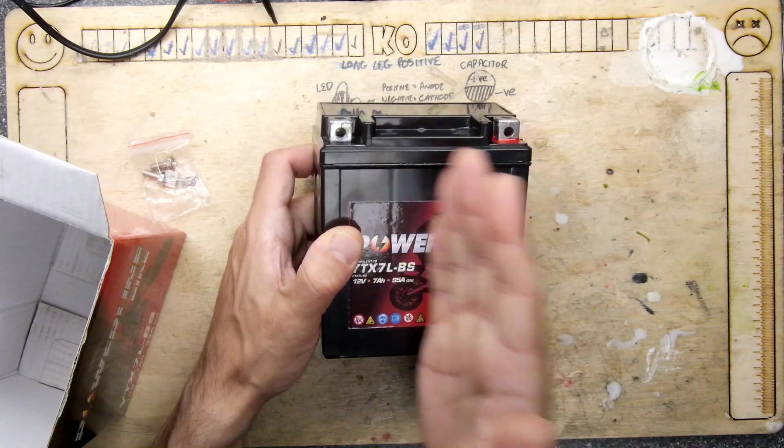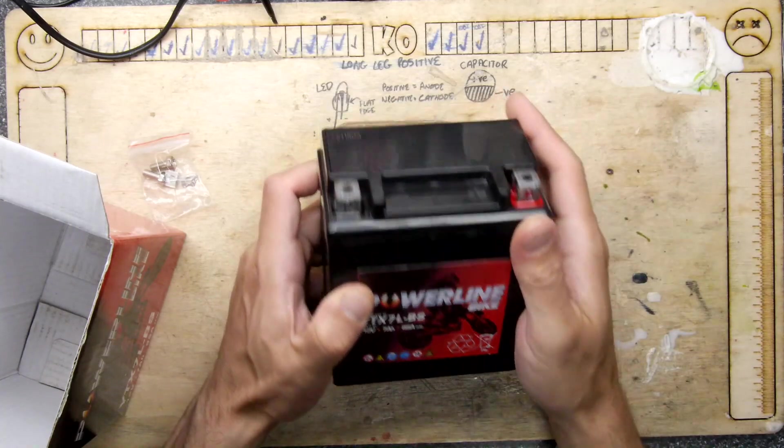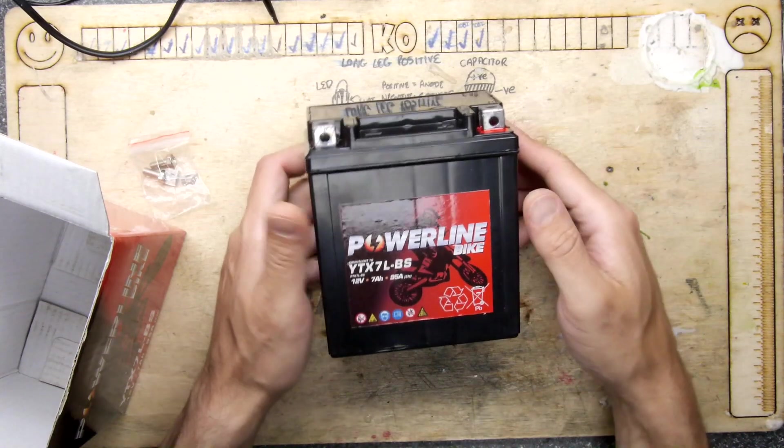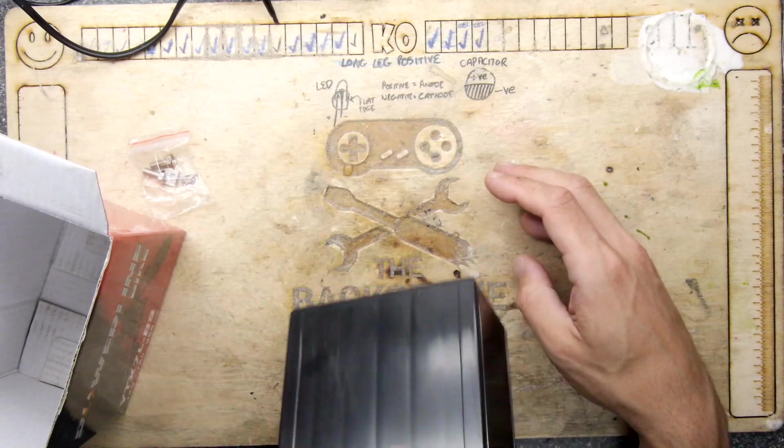My idea was to do that and measure the voltage while that was happening, just to see if the acid as it's filling up and reacting with the different plates would show you the volts going up. But alas, that is not going to be the case.